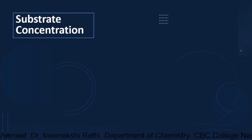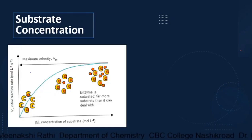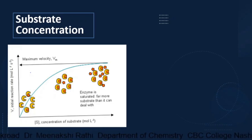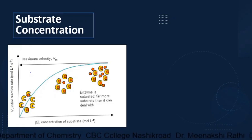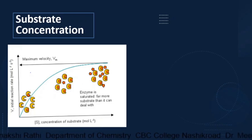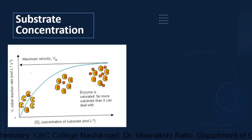Another factor is substrate concentration. You can see in this graph that at the x-axis, concentration of substrate is taken, and at the y-axis, rate of reaction is taken. Initially, substrate concentration is low, then it is increased, and further increased. As we increase substrate concentration, the rate of reaction is not continuously increasing. At lower concentration of substrate, rate of reaction increases, then it becomes curved and then stagnant.